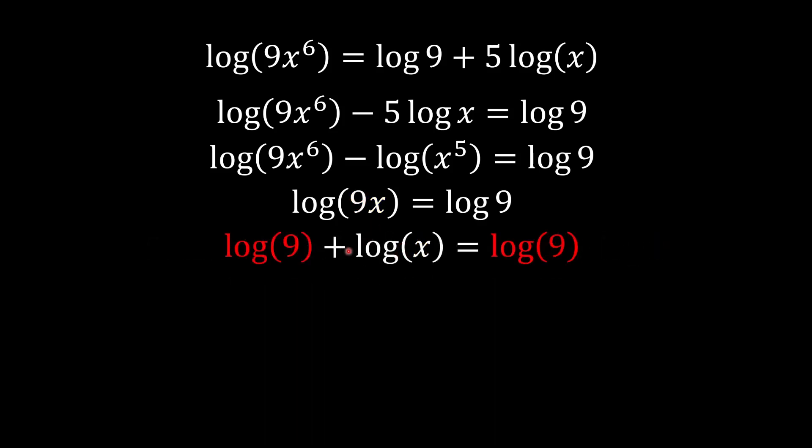Now, we have log 9 on both sides. We can bring this log down on the other side and subtract it and that will give us 0. As you can see, now we have log x equals 0.